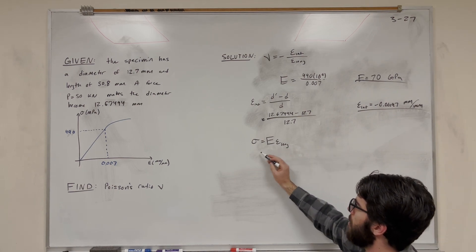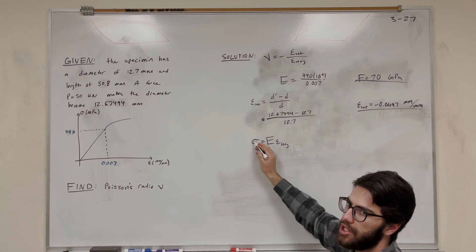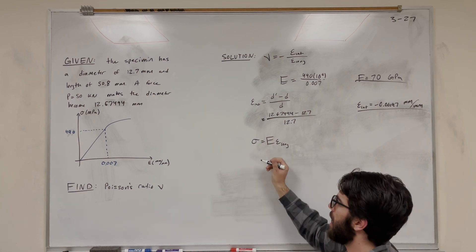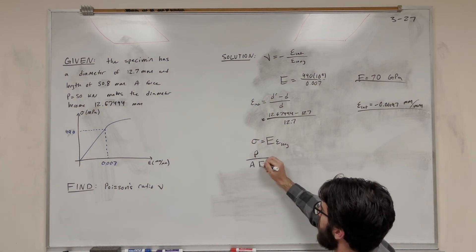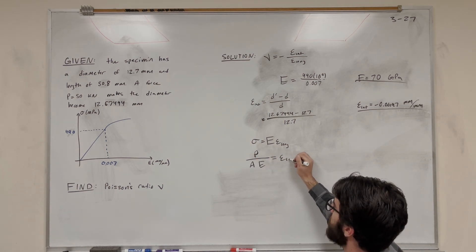So if we're solving for strain, let's go ahead and divide by E. And we also need to expand stress. We know stress is force over area. So we can write that as force over area. And then we're going to divide by that E. And that's going to be equal to epsilon long.